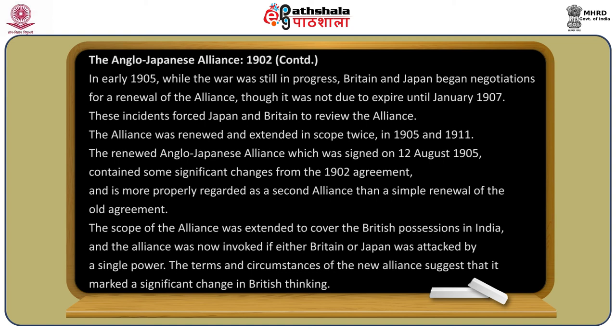In early 1905, while the war was still in progress, Britain and Japan began negotiations for a renewal of the alliance, though it was not due to expire until January 1907. These incidents forced Japan and Britain to review the alliance. The alliance was renewed and extended in scope twice, in 1905 and 1911. The renewed Anglo-Japanese alliance, signed on 12th August 1905, contained significant changes from the 1902 agreement and is more properly regarded as a second alliance than a simple renewal.